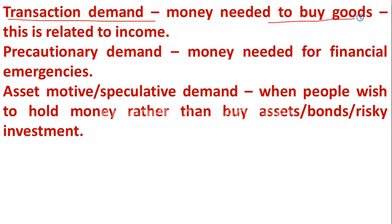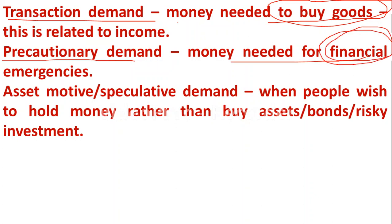Transaction demand for money is money needed to buy goods and services. When income increases, transaction demand for money also increases; decrease in income leads to decrease in transaction demand. The second motive is precautionary demand — money needed for financial emergencies such as accidents, marriage, etc. There is also a positive relationship between income level and precautionary demand for money: when income increases, precautionary demand increases, and when income decreases, precautionary demand decreases.